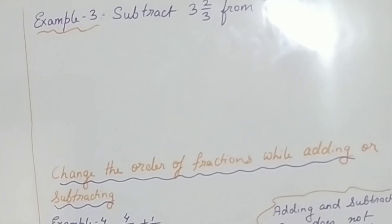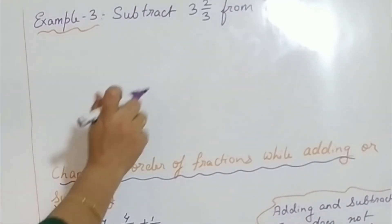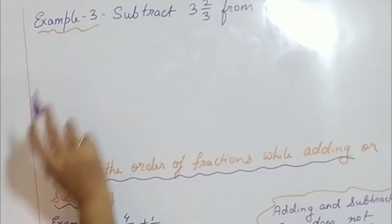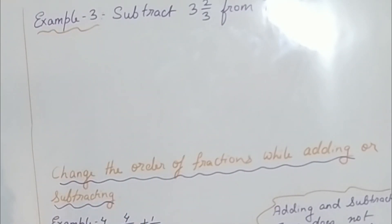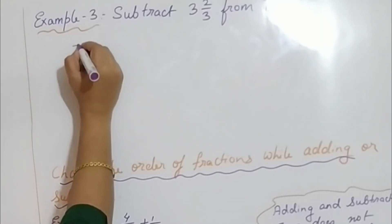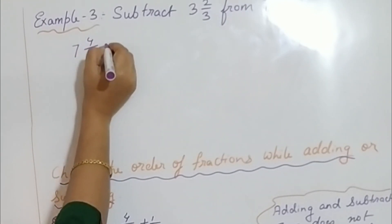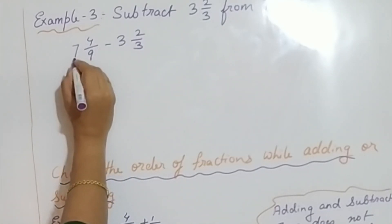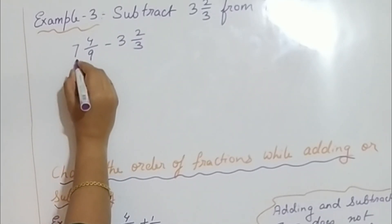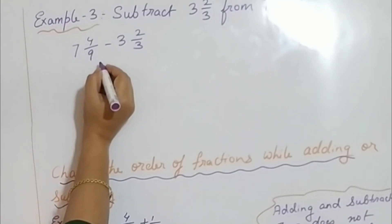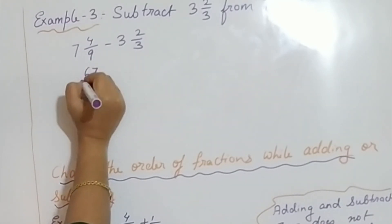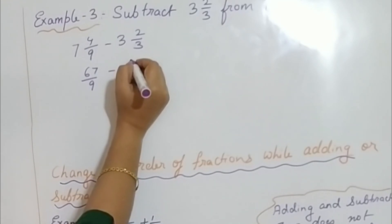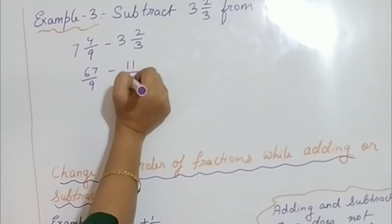Now there is a mixed fraction example. We have 7 and 4 by 9 minus 3 and 2 by 3. So we first convert to improper fractions. 9 into 7 is 63, plus 4 is 67 by 9. And 3 into 3 is 9, plus 2 is 11 by 3. So the question becomes 67 by 9 minus 11 by 3.